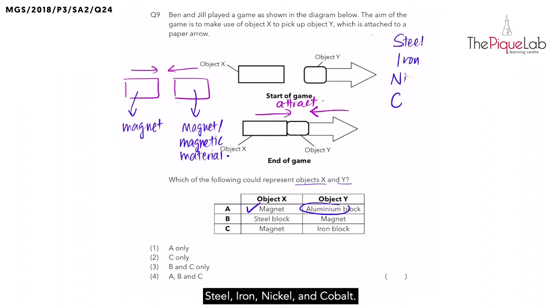iron, nickel, and cobalt. How can we remember S-I-N-C? Singapore is not cool, or smoking is not cool, or some students like to remember it as Superman is not cool. Or some prefer I-S-C-N, I smell chicken nuggets. So these are some possible ways to help remember the four magnetic materials.